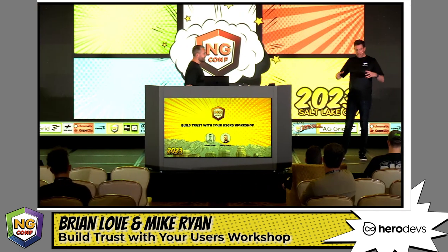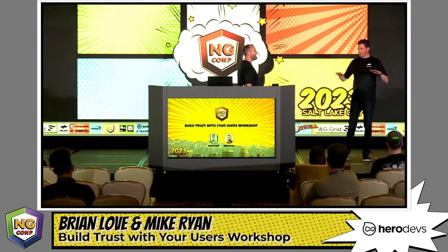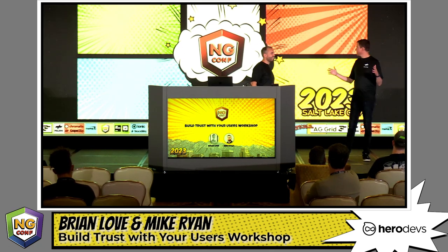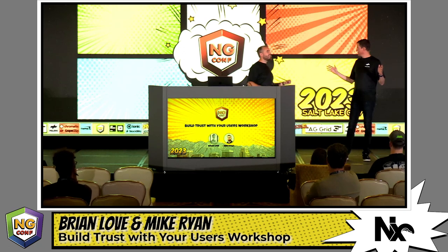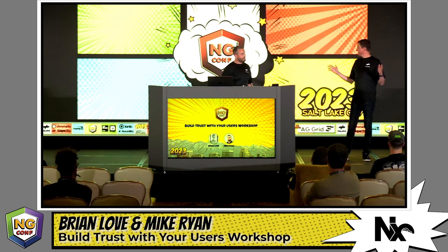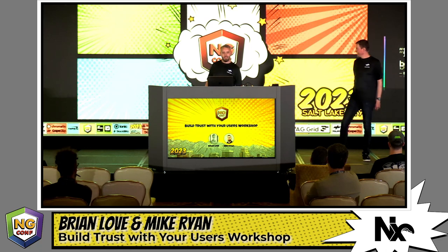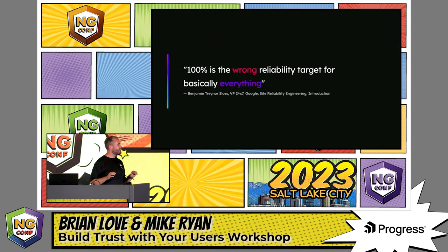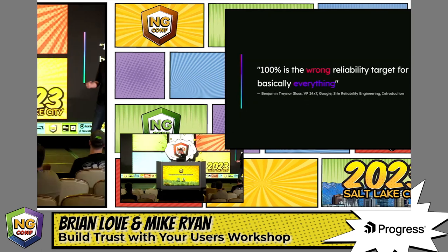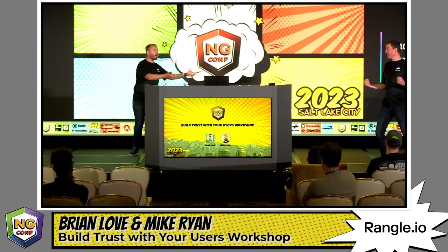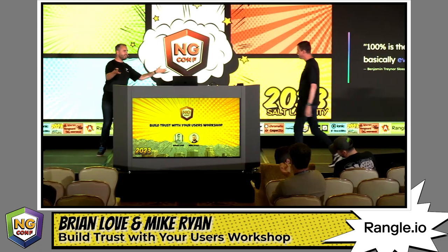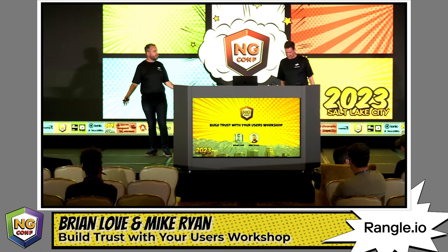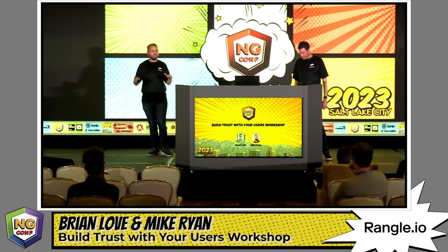It seems like if I'm building an app, this thing should be reliable 100% of the time — zero downtime. You'd be the most amazing engineer on earth if you could build that, because 100% is the wrong reliability target for basically everything. Maybe NASA — if I'm getting in a shuttle I hope the reliability target is pretty high. But it's unrealistic to actually achieve 100%. History shows us that no outage is avoidable.